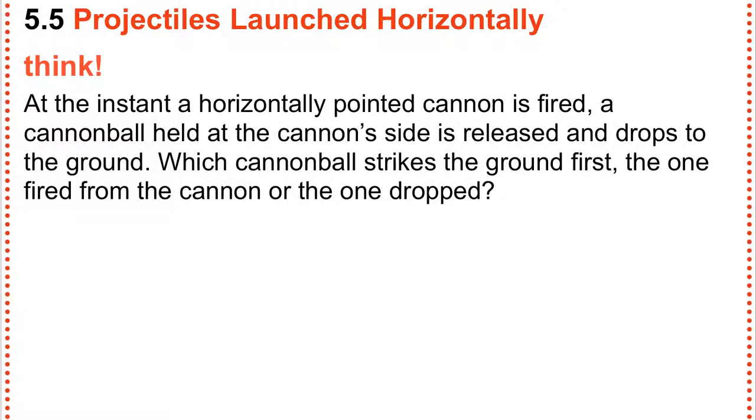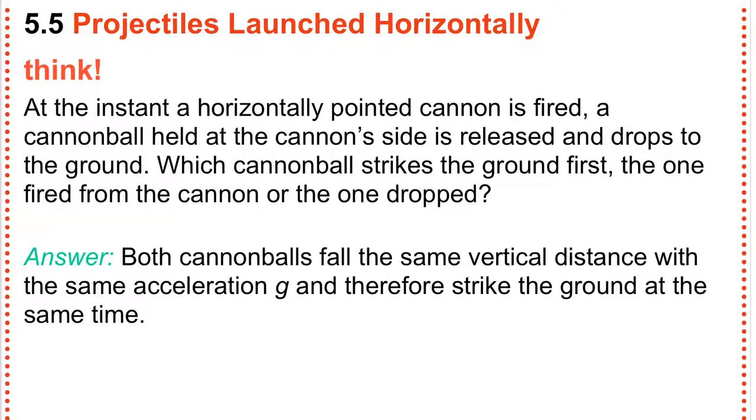One will hit the ground very far away, and one will hit the ground very close to where it started, but in exactly the same amount of time. So shooting a bullet from a gun will land on the ground at the same time as if you drop a bullet from the gun. The speed doesn't have anything to do with it in the X direction. Both cannonballs will have the same vertical distance to fall and the same acceleration of gravity on both, so they will strike the ground at the same time.